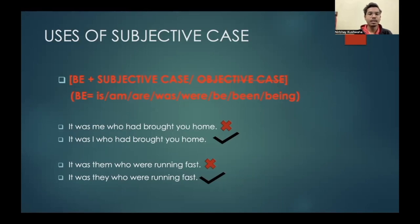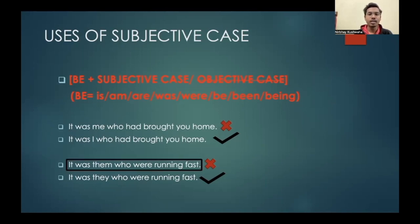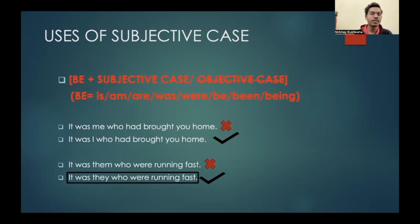Let's see some examples. 'It was me who had brought you home.' Here 'was' is the form of 'be' and is the main verb, so after 'was' the subjective case will be used. Therefore we replace 'me' with 'I', and the sentence becomes: 'It was I who had brought you home.' In the second example: 'It was them who were running fast.' Here 'was' is the main verb and 'them' is an objective case, so we replace it with 'they'. The sentence becomes: 'It was they who were running fast.'